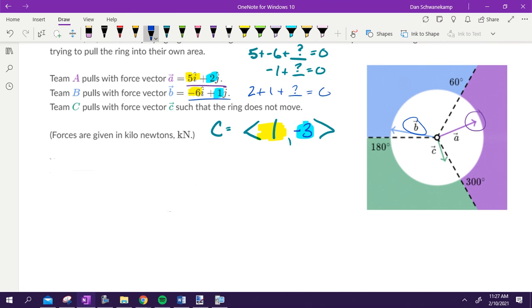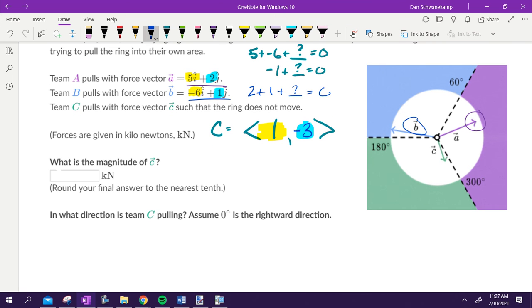All right. So we found our missing vector. Using that information, what is the magnitude of C and what direction are they pulling C? Figure out those two things now that we found this new vector. Try that with your neighbor. Go. So I've given, I'm giving you a vector. This vector right now is like X and Y. If I'm giving you X and Y and I want to know magnitude, what am I going to do?